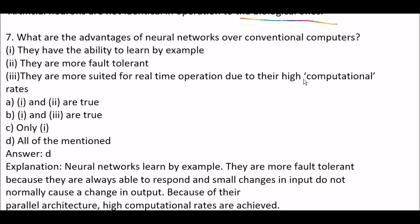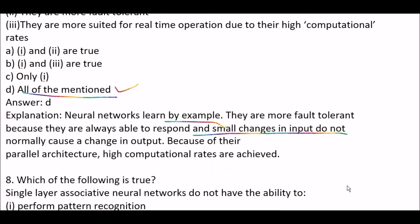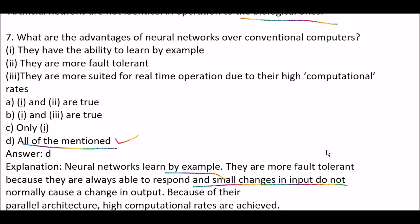Next question: what are the advantages of neural networks over conventional computers? Statement 1: they have the ability to learn by example. Statement 2: they are more fault tolerant. Statement 3: they are more suited for real-time operations due to their high computational rates. Option A: first and second are true. Option B: first and third are true. Option C: only first is true. Option D: all of the mentioned. The right answer is option D — all of the mentioned are true, because neural networks learn by example, are more fault tolerant (always able to respond and a small change in input does not normally cause a change in output), and achieve high computational rates due to their parallel architecture.